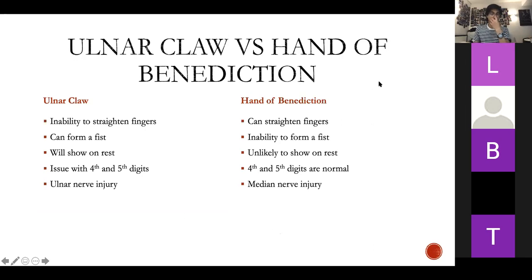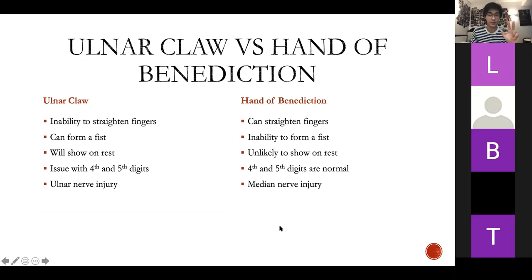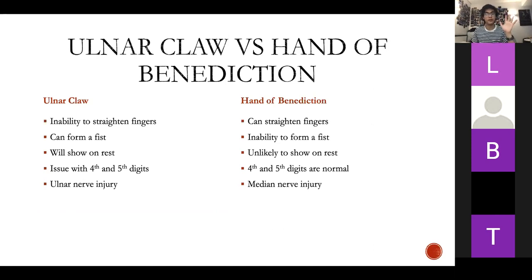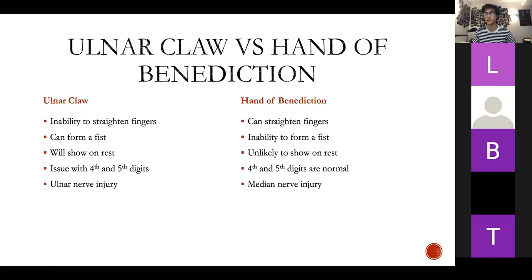Ulnar claw versus hand of benediction — they essentially look the same but are different. Ulnar claw: I can form a fist but can't straighten my fingers. Hand of benediction: my hand presents extended, I can straighten my fingers, but if asked to form a fist I can't move the index and middle fingers. Ulnar claw is a median nerve injury versus ulnar nerve injury — ulnar claw presents at rest since we normally walk around with hands extended, whereas hand of benediction can look normal at rest but fails on attempted fist.